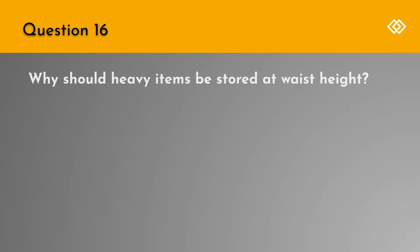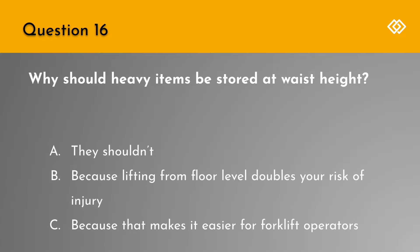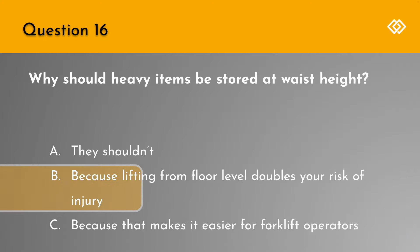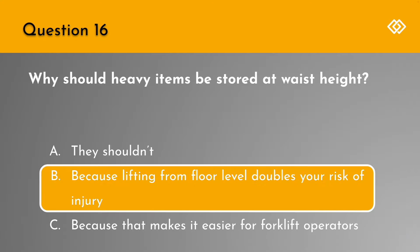Question 16. Why should heavy items be stored at waist height? A. They shouldn't. B. Because lifting from floor level doubles your risk of back injury. Or C. Because that makes it easier for forklift operators. The correct answer is B. Because lifting from floor level doubles your risk of back injury.